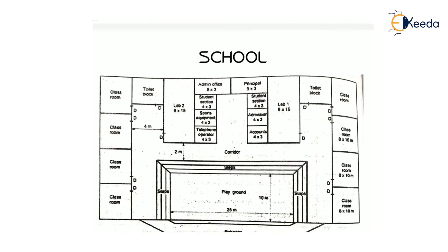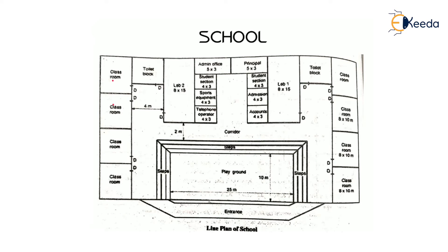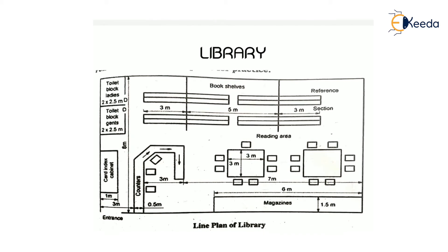This is another simple line plan of a school building where classrooms, toilets, admin office, admission, accounts, telephone operator, playground, and laboratories are all included. This is the line plan of a library, where the reading area, bookshelves, reference bookshelves, toilet block, and counter section are available. Using the planning principles and component sizes, we make a simple line plan of a library — that is the educational building type.